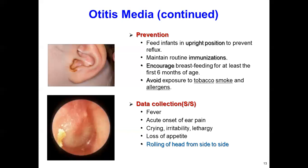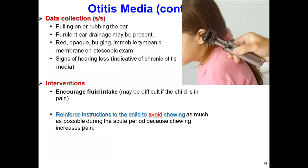Some patients develop pus or hearing issues, and decreased movement of the tympanic membrane. Other data: pulling on or rubbing the ear, purulent (pus) discharge, ear drainage may be present, and red, opaque, bulging, immobile tympanic membrane on otoscopic exam.